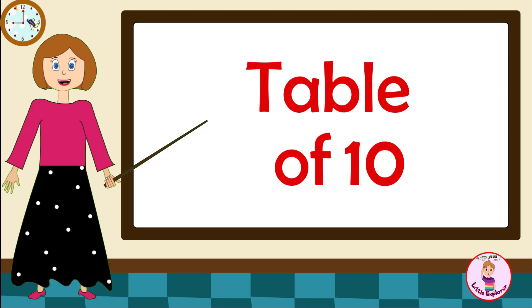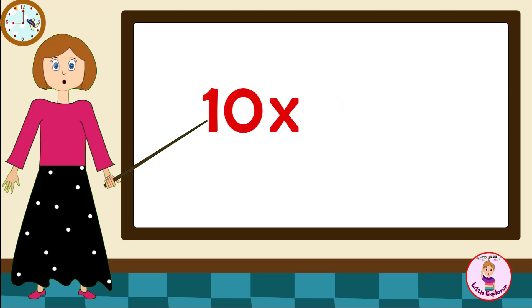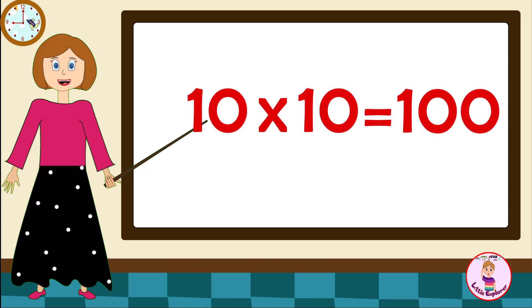Table of Ten: Ten ones are ten, ten twos are twenty, ten threes are thirty, ten fours are forty, ten fives are fifty, ten sixes are sixty, ten sevens are seventy, ten eights are eighty, ten nines are ninety, ten tens are one hundred.